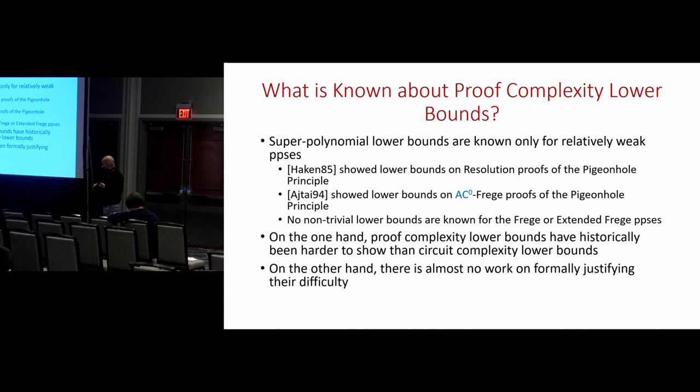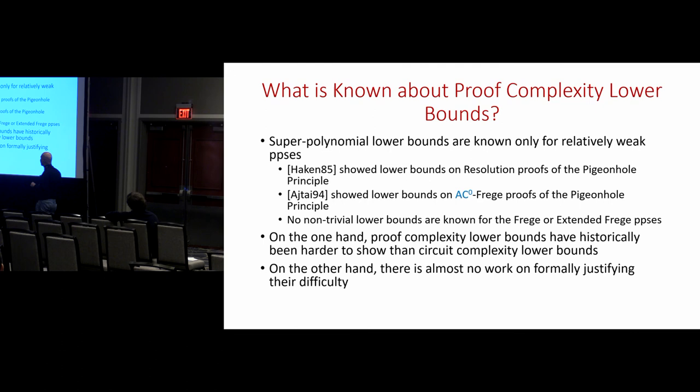There are Frege proof systems which correspond naturally to circuit classes: resolution corresponds to clauses, constant-depth Frege to AC0, Frege corresponds to formulas, and extended Frege corresponds to circuits. Looking at things from that point of view, we're even further behind improving lower bounds in proof complexity than we are in circuit complexity. On the one hand, proof complexity lower bounds have historically been harder to show than circuit complexity lower bounds. On the other hand, there has been almost no work formally justifying their difficulty or trying to explain it.